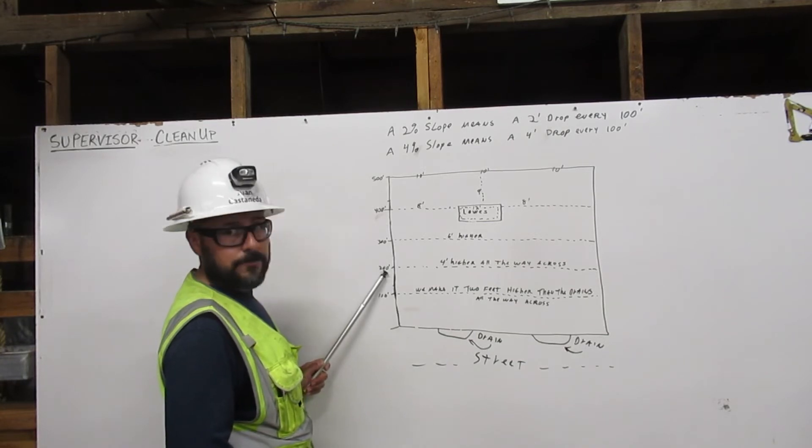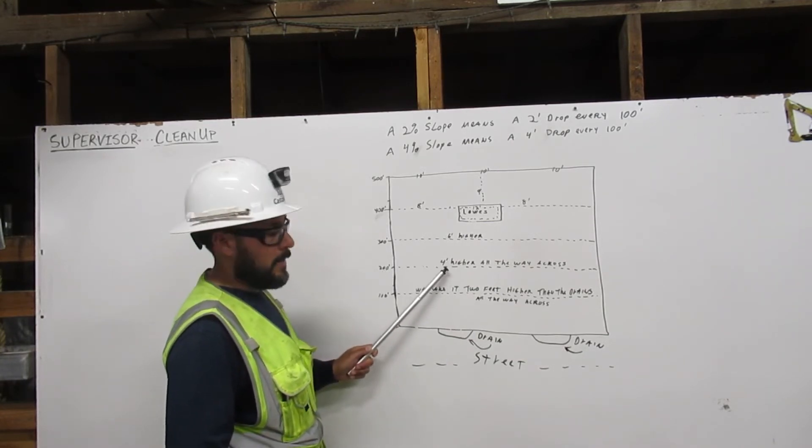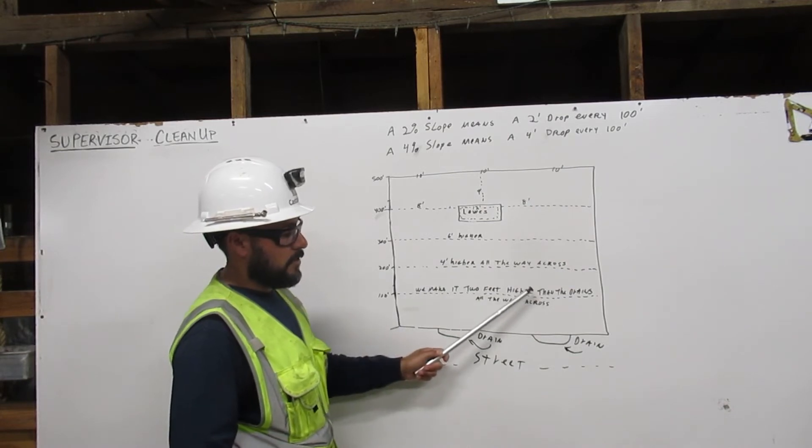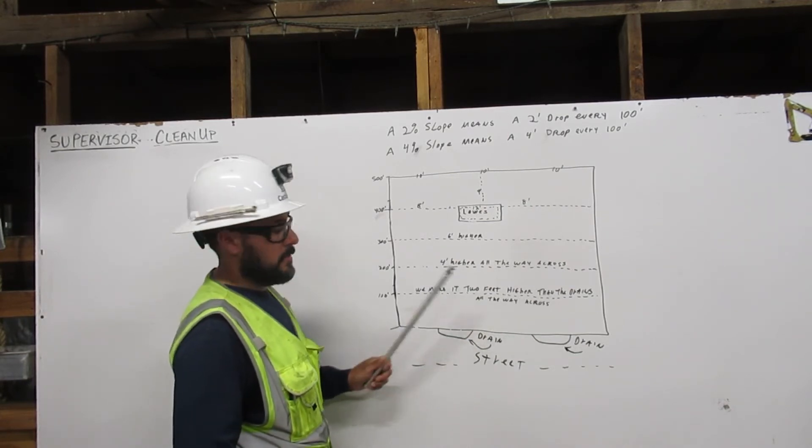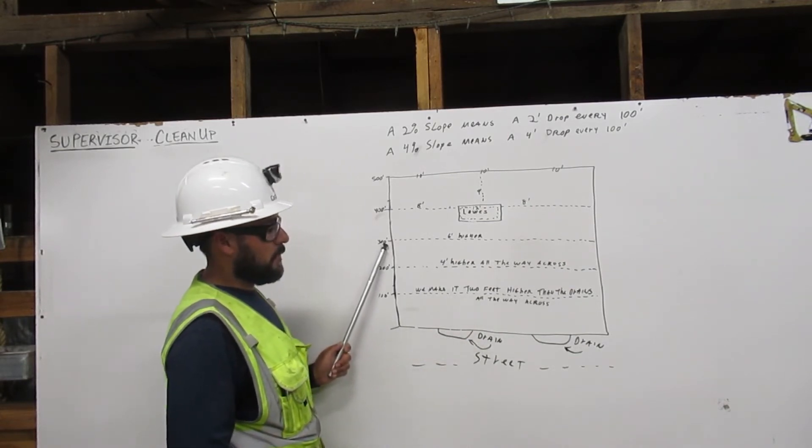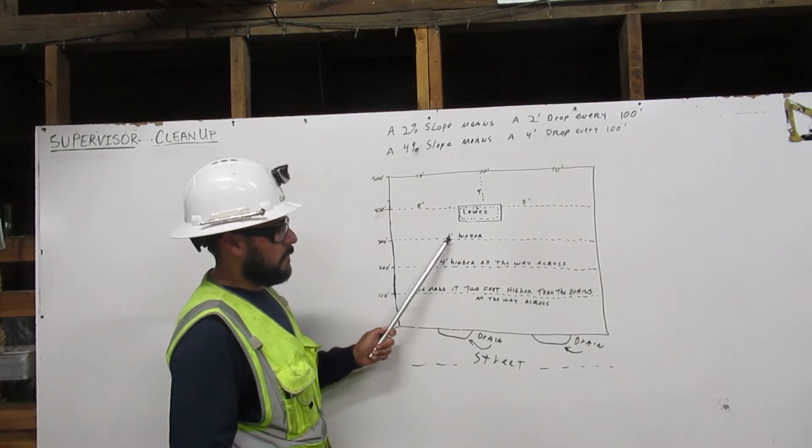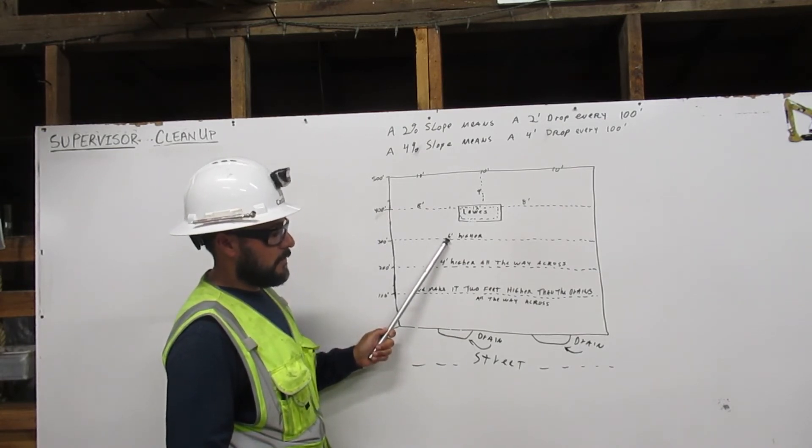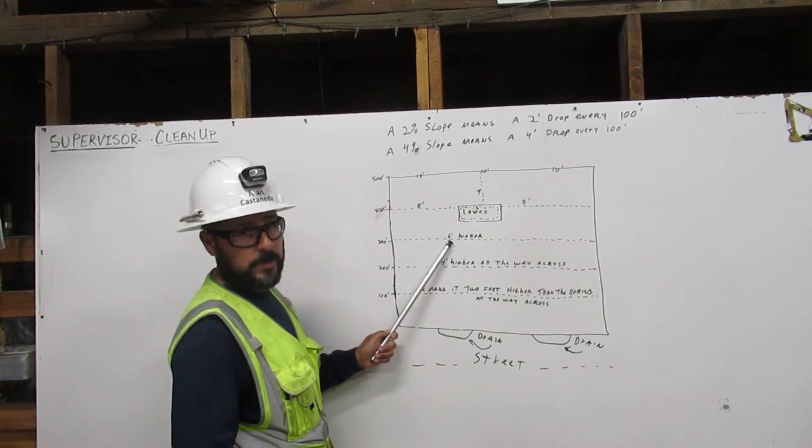At 200 feet, we make it 4 feet higher than the drains all the way across. At 300 feet, we make it 6 feet higher than the drains all the way across.